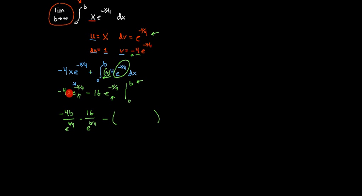If we plug in 0 into the next one, this is going to be a 0 up in the top of this fraction. So 0 divided by 4 is 0. Anything to the 0 power is 1. So we're just going to be left with a negative 16. So that's kind of nice.